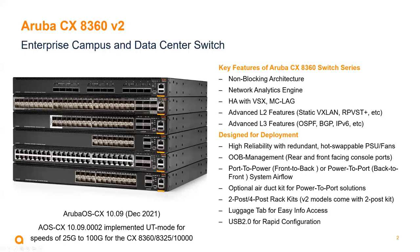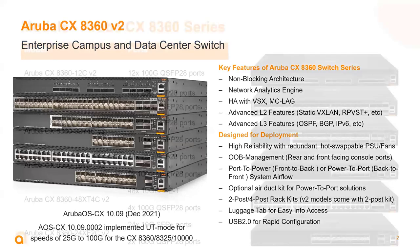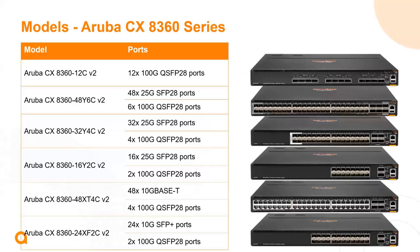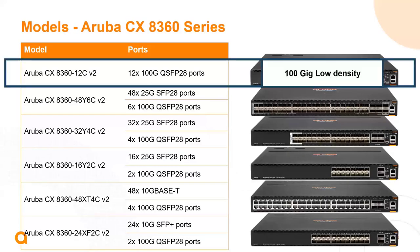With 10.9 we implemented unsupported transceiver mode for speeds all the way up to 100 gig on the 8360, the 8325, and the 10K.